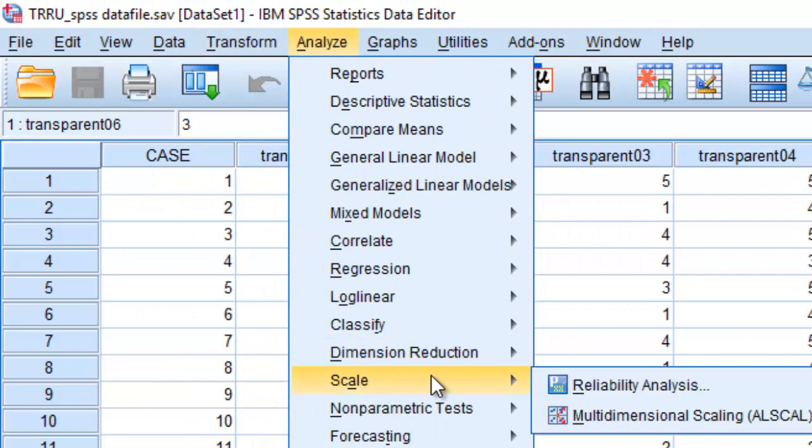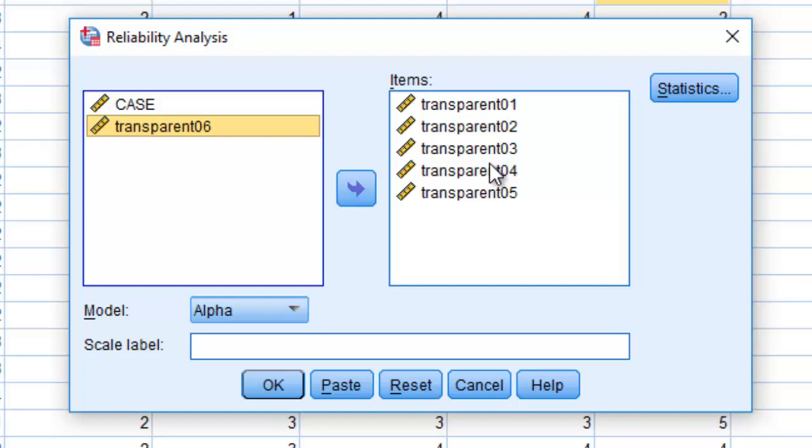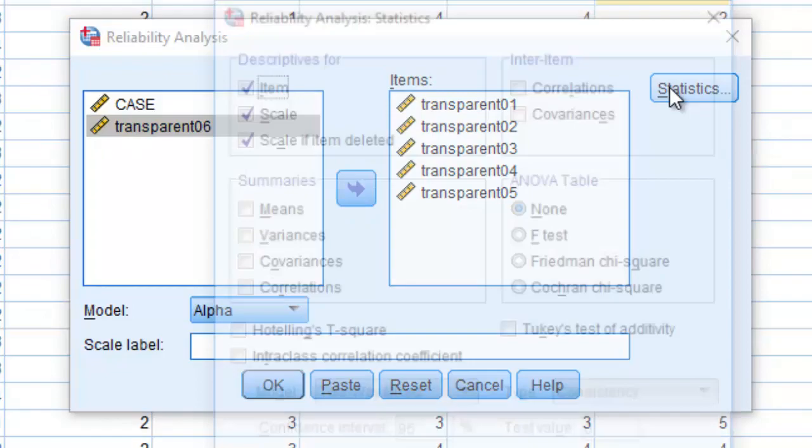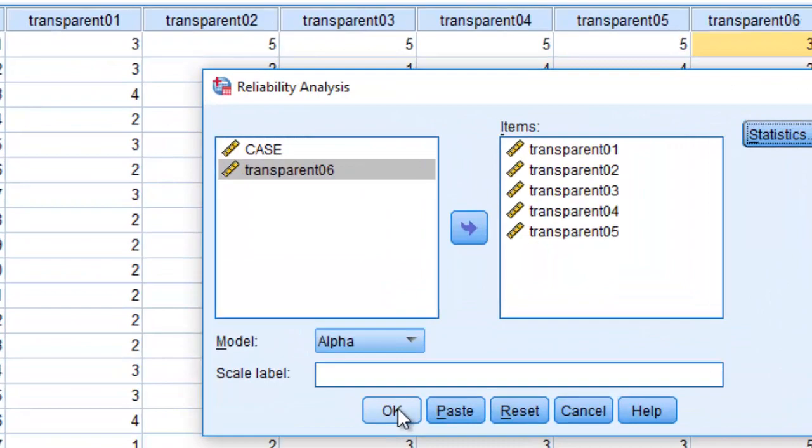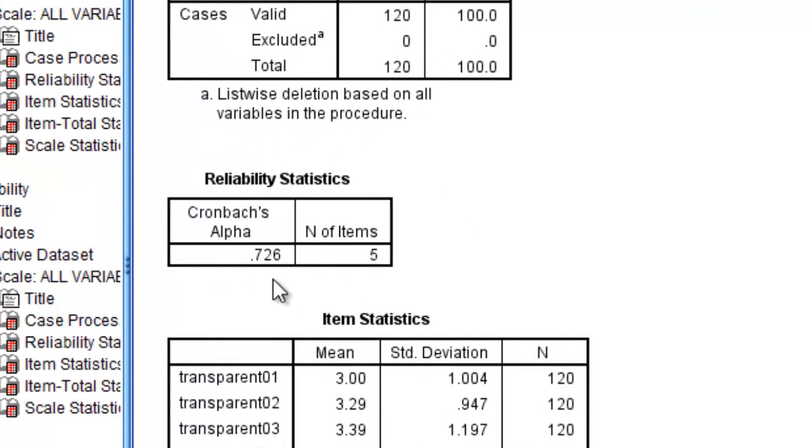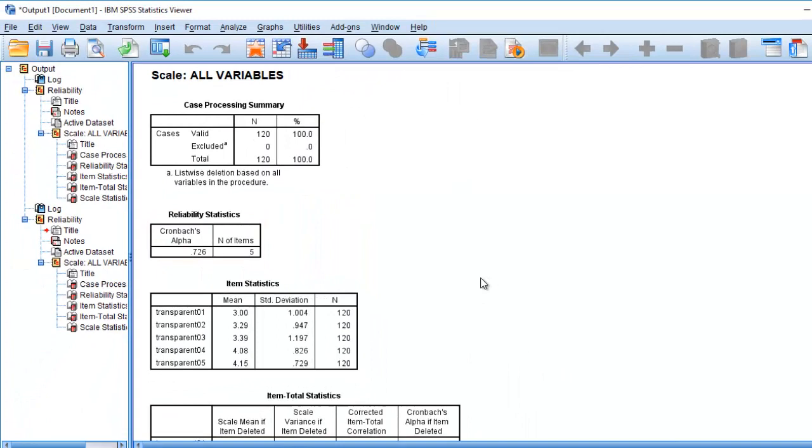Just to show you, demonstrate what I'm talking about. Now, go back to the analyze, scale, reliability analysis, and go ahead and remove that item. Now we're just looking at coefficient alpha or calculating coefficient alpha across the five items. Click statistics, the same three boxes, continue, and then click on OK. Just as the previous table showed, we now have Cronbach's alpha of 0.726.